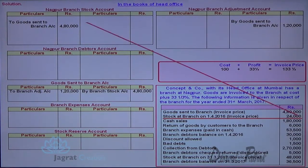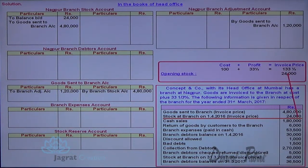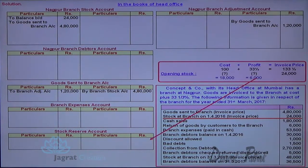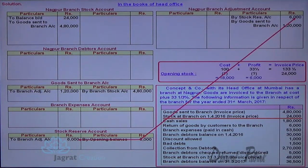Opening stock at branch is 24,000 at invoice price, and it contains a profit element. Using the ratio 133 and one-third to 33 and one-third: for 24,000, the cost is 18,000 and the profit element is 6,000. So there is an opening stock reserve of 6,000. The entry is: stock reserve account debit to branch adjustment account credit, 6,000. This is how opening stock gets recorded.